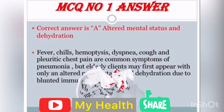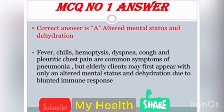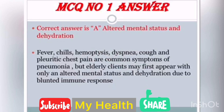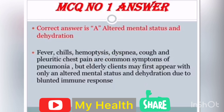Now we will look at the answers with rationale. For MCQ number 1, the correct answer is A — Altered mental status and dehydration. The rationale is: fever, chills, dyspnea, cough, and pleuritic chest pain are common symptoms of pneumonia, but elderly clients may first appear with only an altered mental status and dehydration due to a blunted immune response.